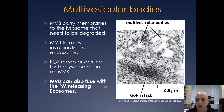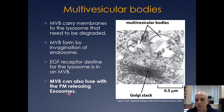Something that's kind of interesting is that occasionally these multivesicular bodies can actually fuse with the plasma membrane, and these release exosomes. These exosomes are actually quite actively studied right now because they seem to be a common occurrence that happens in specific cancer cells.